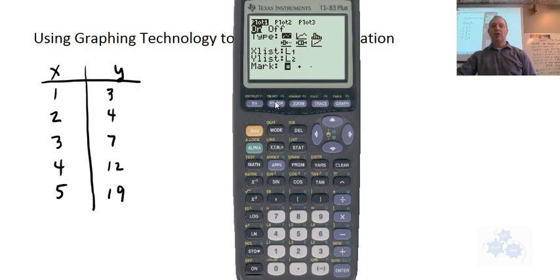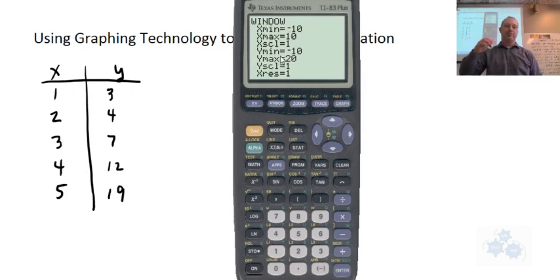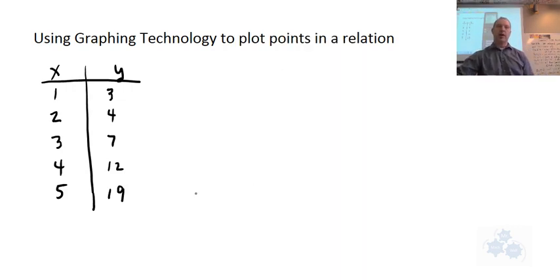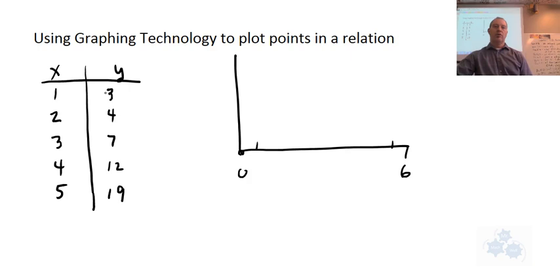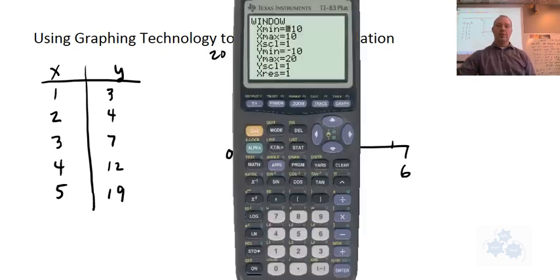So now what we're going to do is we're going to change the window. Go to the window. Now, if we were to plot this manually, it looks like the x values are all in the positive direction, right? So the x values would be from zero to maybe five, right? So let's say zero to, let's say this is going to be six. So I can put all of my numbers on there, one to five. This one goes from three to 19. So let's make this zero, and let's make this 20. How about that?